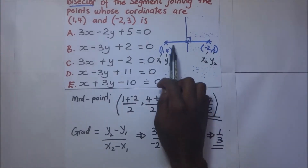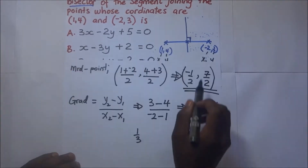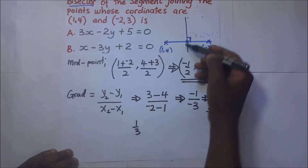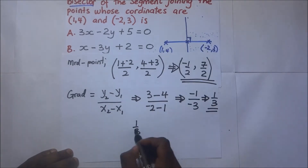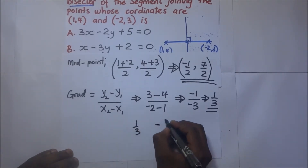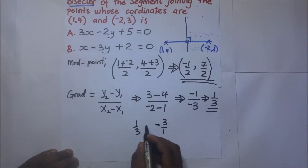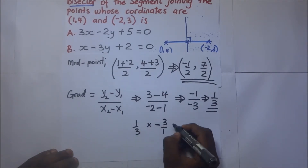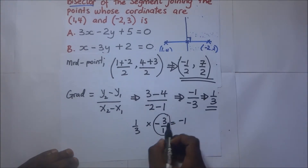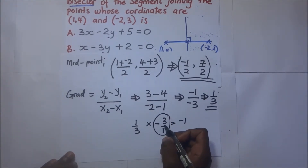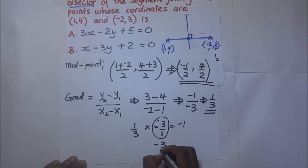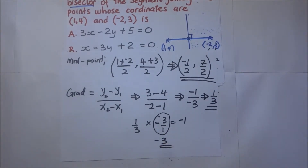The gradient of the original line is 1 over 3. The gradient of the perpendicular bisector is the negative reciprocal, which is negative 3 over 1, or negative 3. When you multiply 1 over 3 by negative 3 you get negative 1, confirming they are perpendicular.